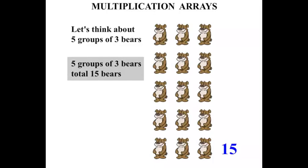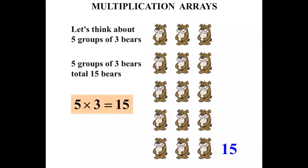Now that's a sentence. We can write that as a number sentence as well. Five groups of three — we can write as five times three. The total is fifteen, so we can write that it equals fifteen. Five times three equals fifteen. That's a number sentence.